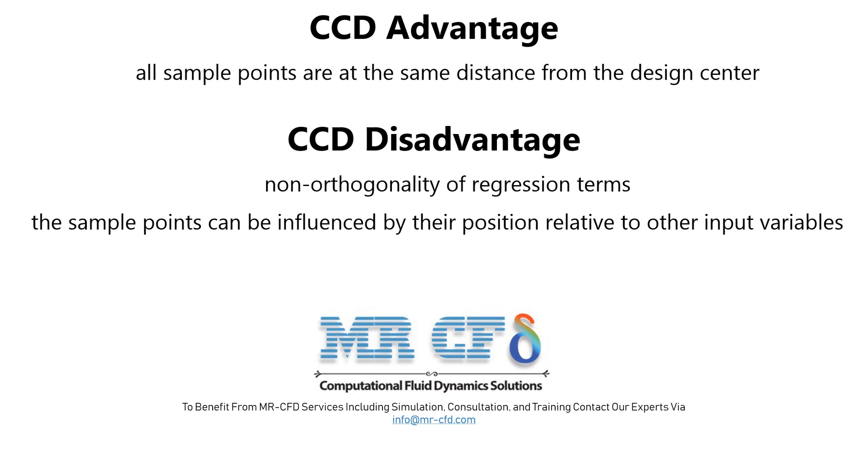While there are two criteria as a weak point in the Central Composite model or CCD to set up an optimal design. First, the non-orthogonality of regression terms, the linear intensity, can make the variance of the model coefficient large or swollen. Second, the position of the sample points in the design can be influenced by their position relative to other input variables in a subset of the entire set of observed data.